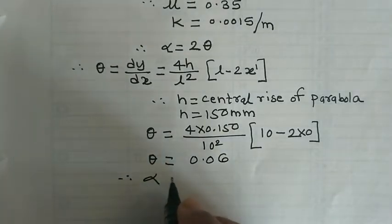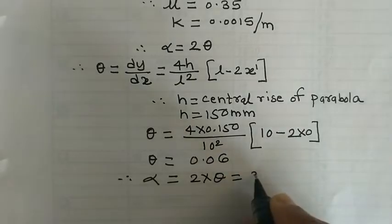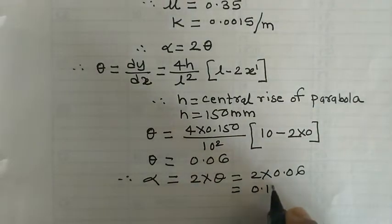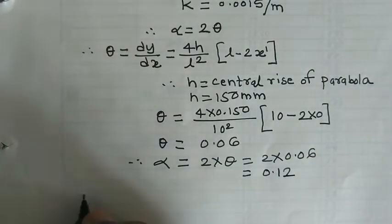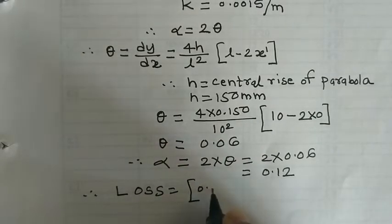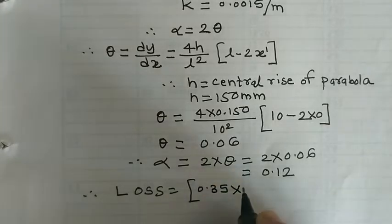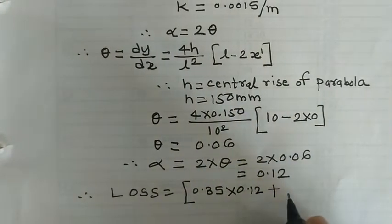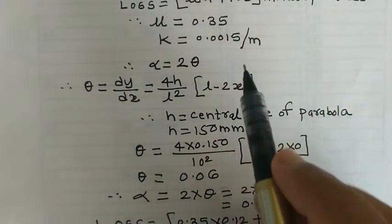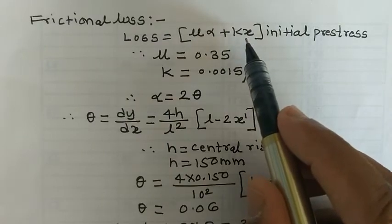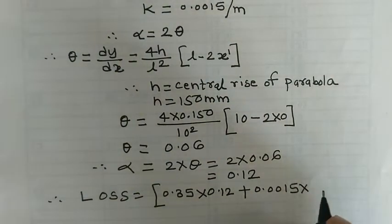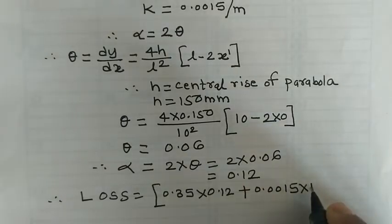Once we get theta = 0.06, alpha = 2 × theta = 2 × 0.06 = 0.12 radians. Now we can find the loss due to friction. Mu = 0.35, alpha = 0.12, k = 0.0015 per meter, and x = 10 meters (the span), since maximum loss is always at the remote end where x equals the full span.